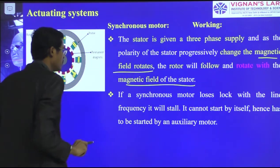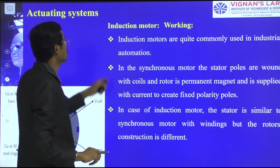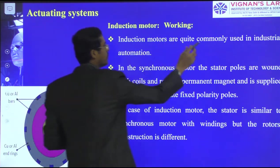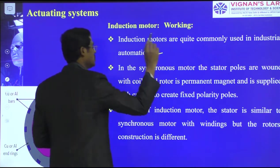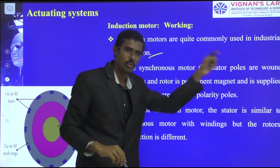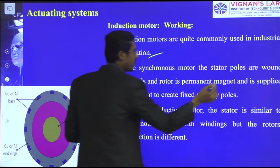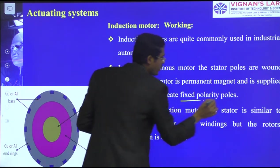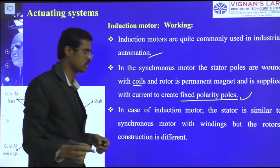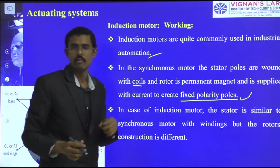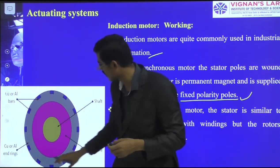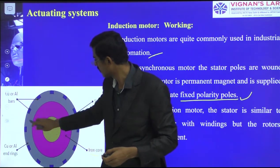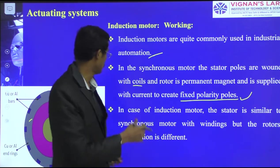Induction motors are another method and are quite commonly used in industrial automations. Like the synchronous motor, they have a wound stator coil and the rotor's permanent magnet, supplied with current to create a fixed quantity of force. A variant of the induction motor also contains a shaft at the center with an iron core, and similar stator and rotor methods.